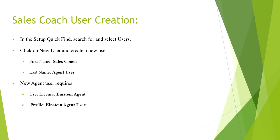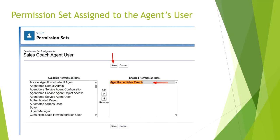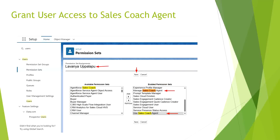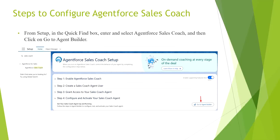Next, we have to create a Sales Coach Agent user. While creating this user, we have to select the user license as Einstein Agent and profile as Einstein Agent User. Next, we have to assign the Agent for Sales Coach permission set to the agent user. If we want the user to manage Sales Coach, assign the Manage Sales Coach Agent permission set. If we want the user to use Sales Coach, assign the Use Sales Coach Agent permission set. Here I am assigning both permission sets to my user. Then we have to add the Agent for Sales Coach Lightning Web Component to the record page and create the Sales Coach agent.